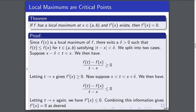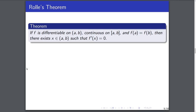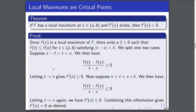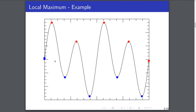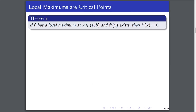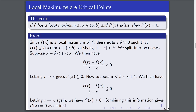Looking at the proof, it doesn't seem immediately obvious, but it makes sense geometrically. What we were doing is: in a tiny neighborhood around a local maximum, all points are less than or equal to the maximum value. We can change the sign of the bottom part of our difference quotient depending on which side we approach from. This implies the derivative has to be 0 there.